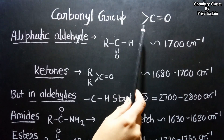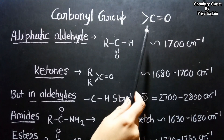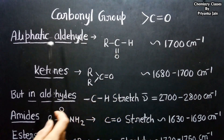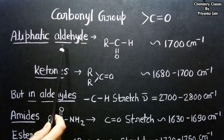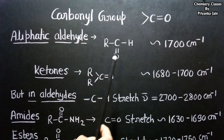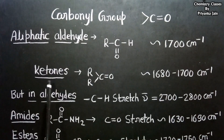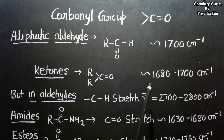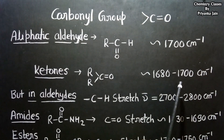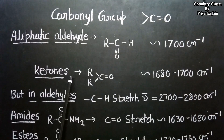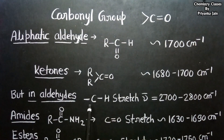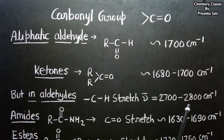The position of the carbonyl absorption changes slightly depending on different groups or derivatives. In aliphatic aldehydes (RCHO), IR absorption is at 1,700 cm⁻¹. In aliphatic ketones (R₂C=O), it absorbs somewhat less, near 1,680 to 1,700 cm⁻¹. To distinguish between them, note that in aldehydes there is a hydrogen present, so we get a C-H stretch near 2,700 to 2,800 cm⁻¹ which is characteristic for aldehydes.